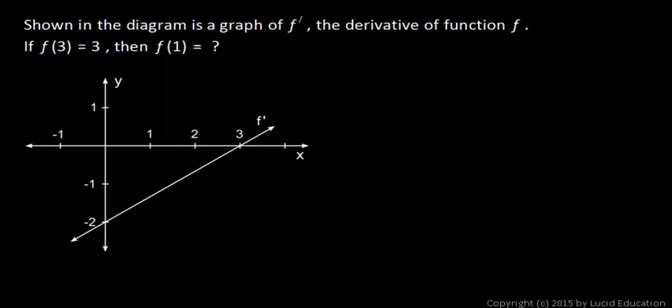In this problem, we're shown a graph of f prime, the derivative of function f, and we're asked if f of 3 is equal to 3, then what is f of 1?